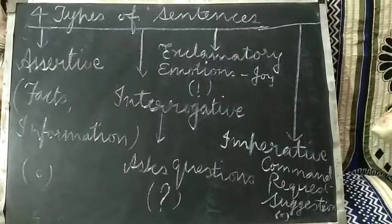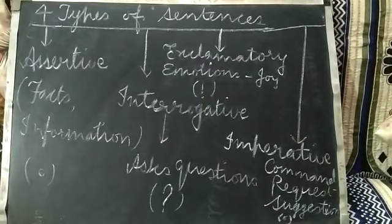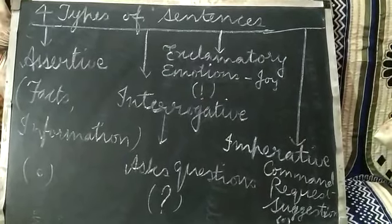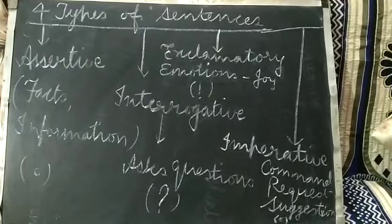A sentence is a group of words which makes a complete sense. Now there are four types of sentences: Assertive, Interrogative, Exclamatory and Imperative.